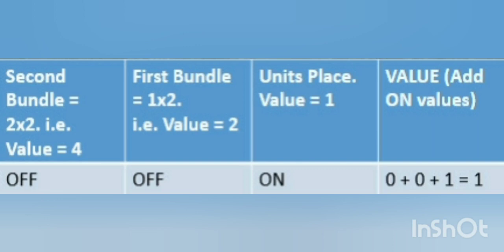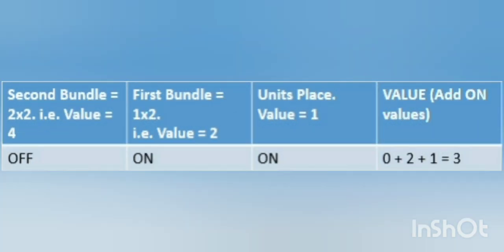Suppose I can take another example. Second bundle value is off. First bundle is on. Units place is also on. So what will be the number? 0 plus 2 plus 1 equals 3. Right?